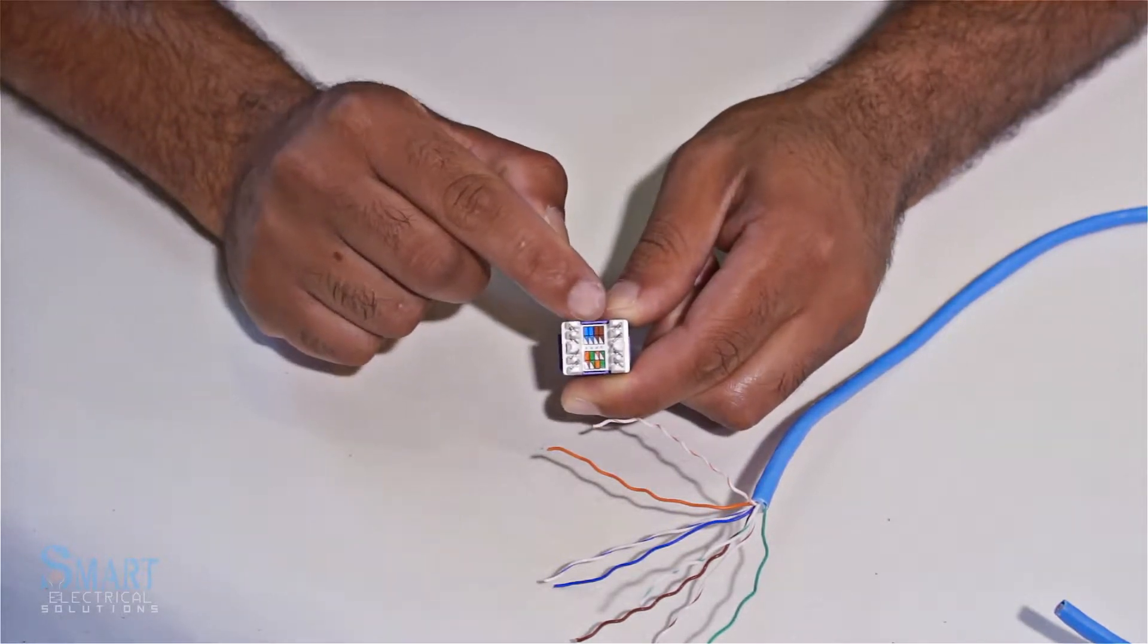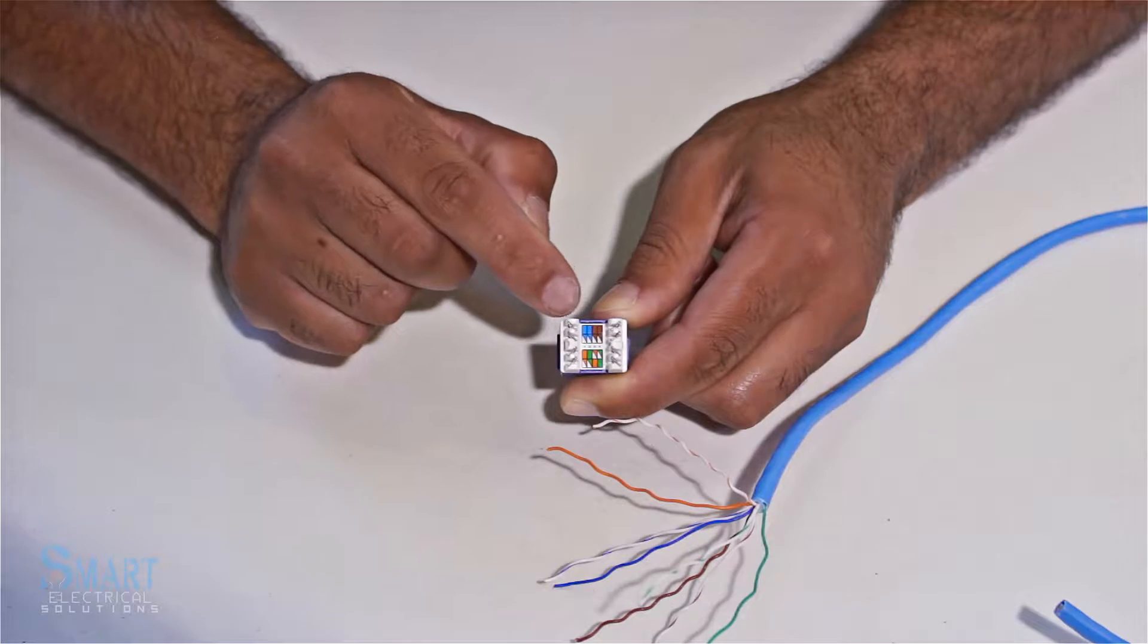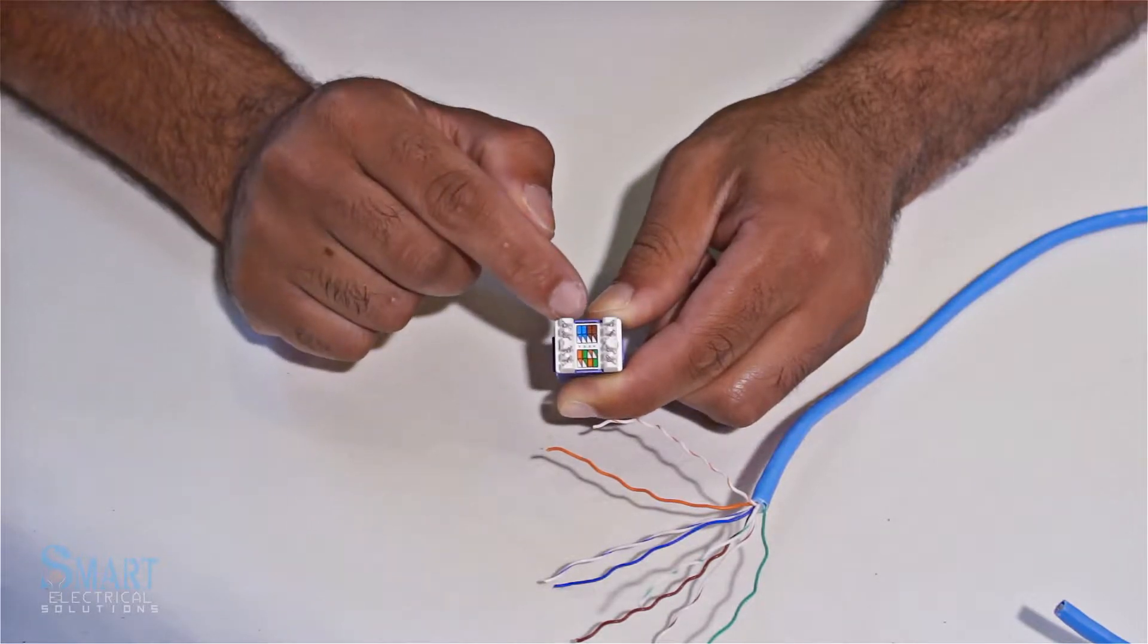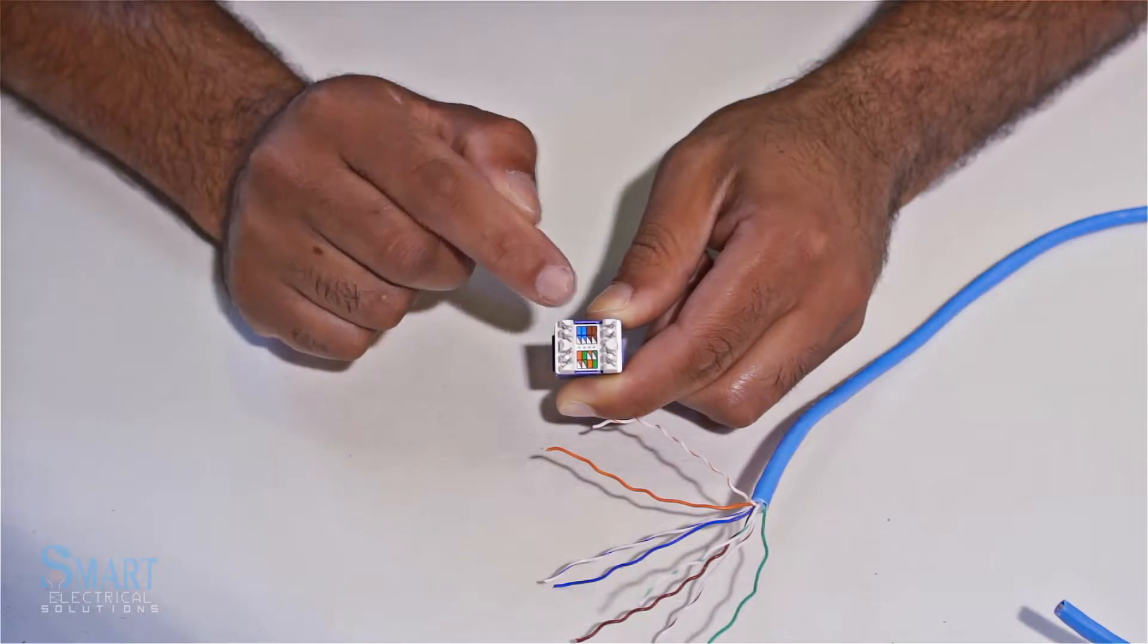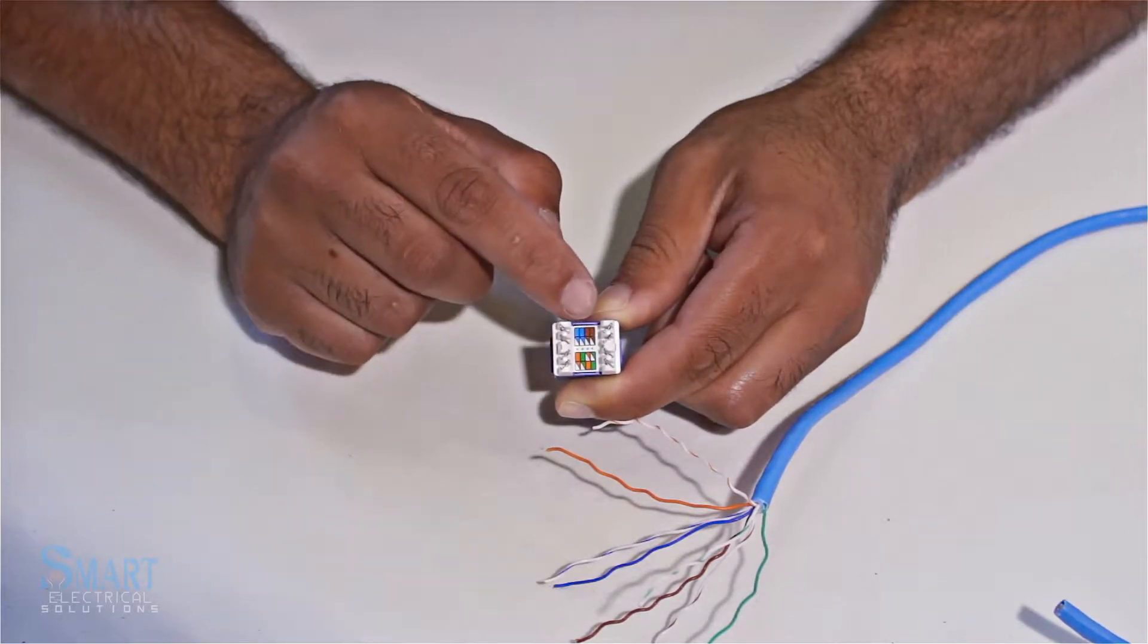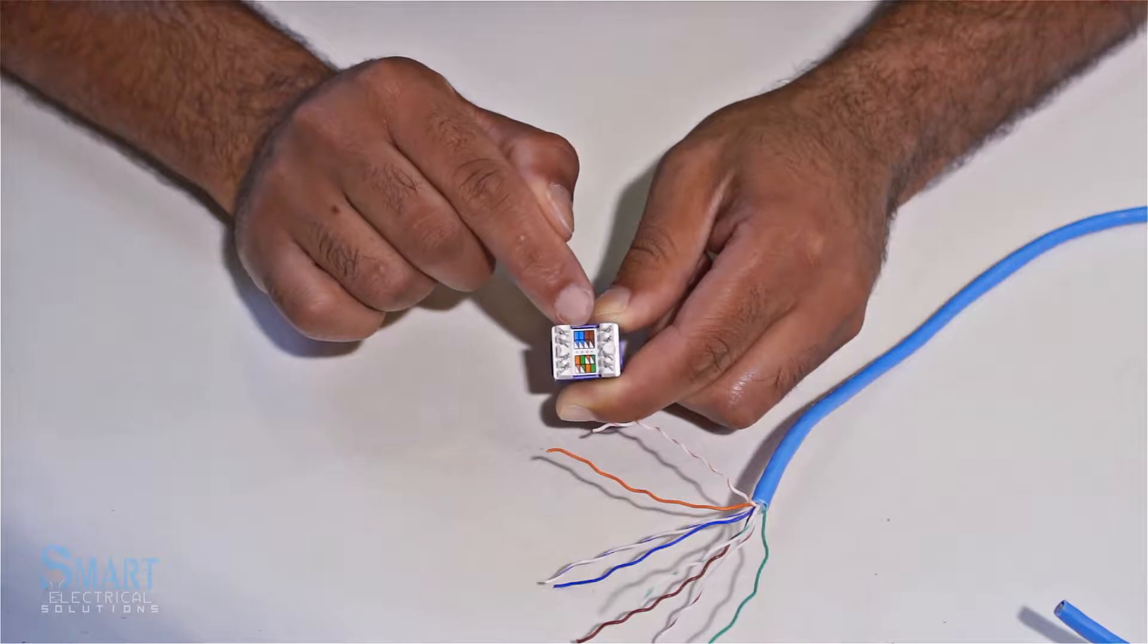You can either use A or B. For residential and most commercial settings, we're going to use the B setting. If you look here, B is in the middle. Starting from this side is blue, white blue, green, white green on that side. Coming back is orange, orange white, brown white, and then brown.